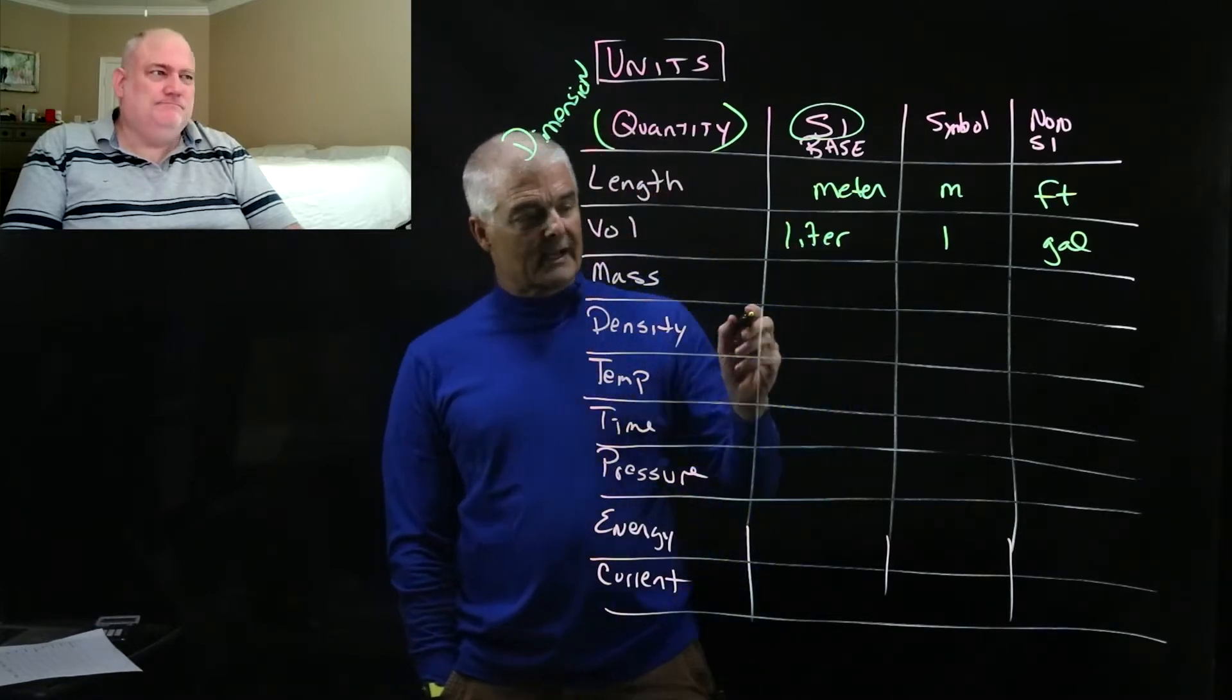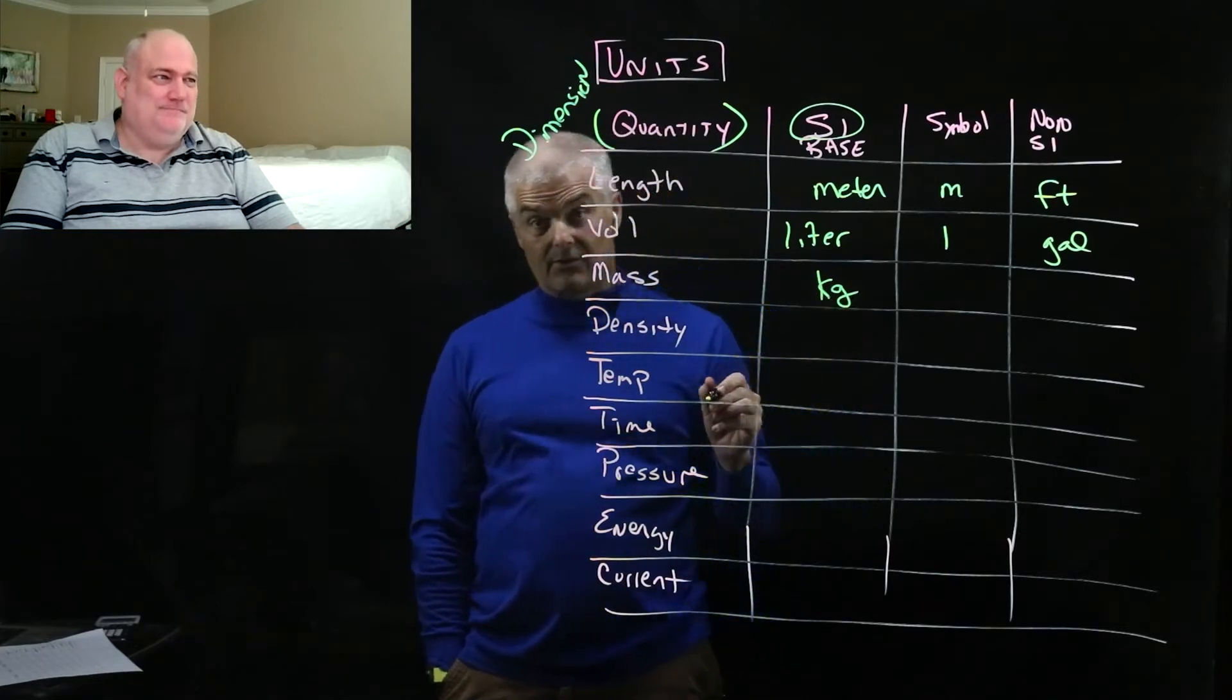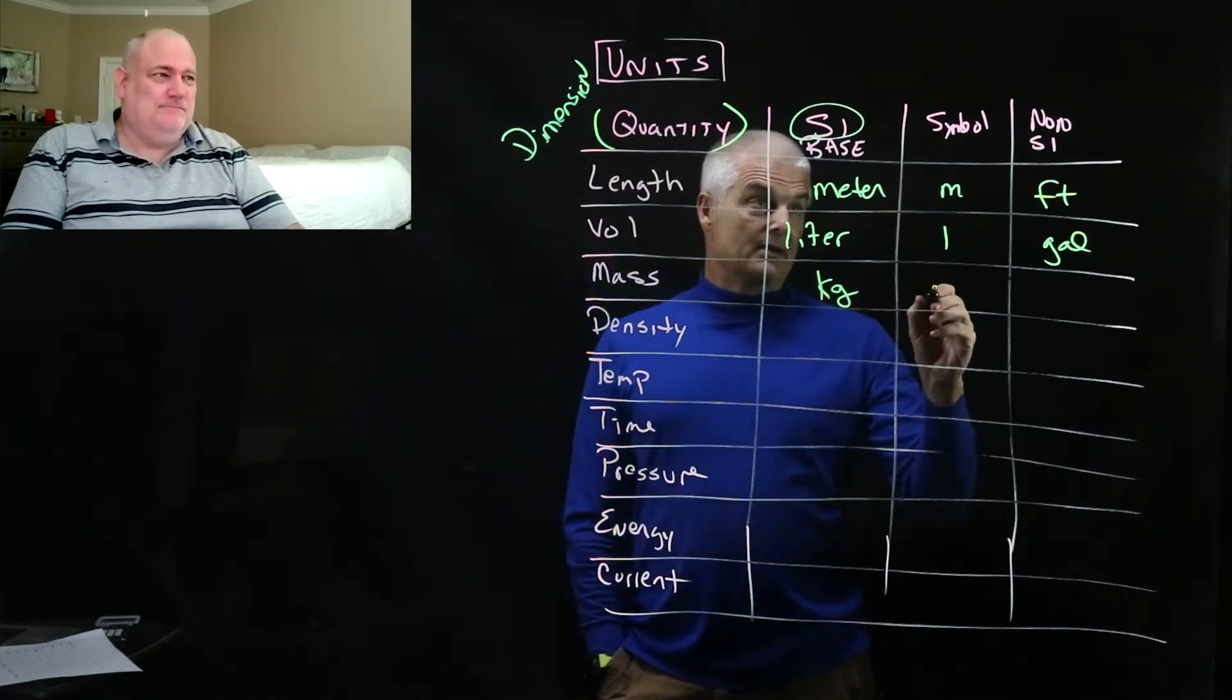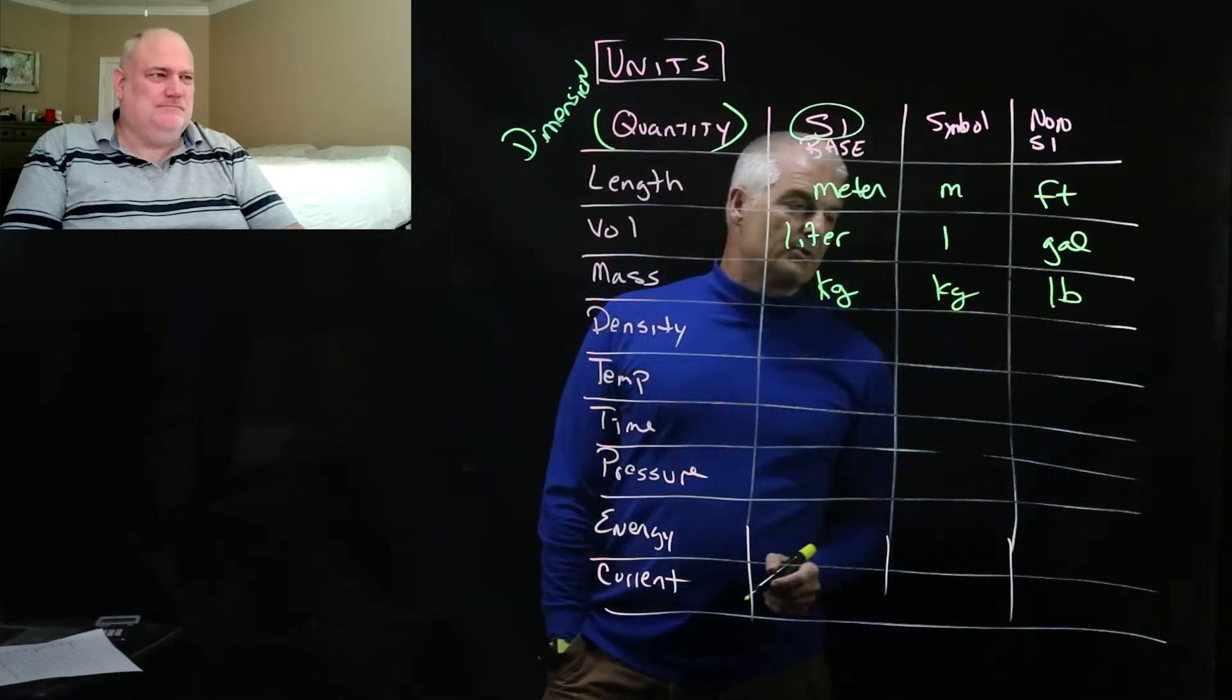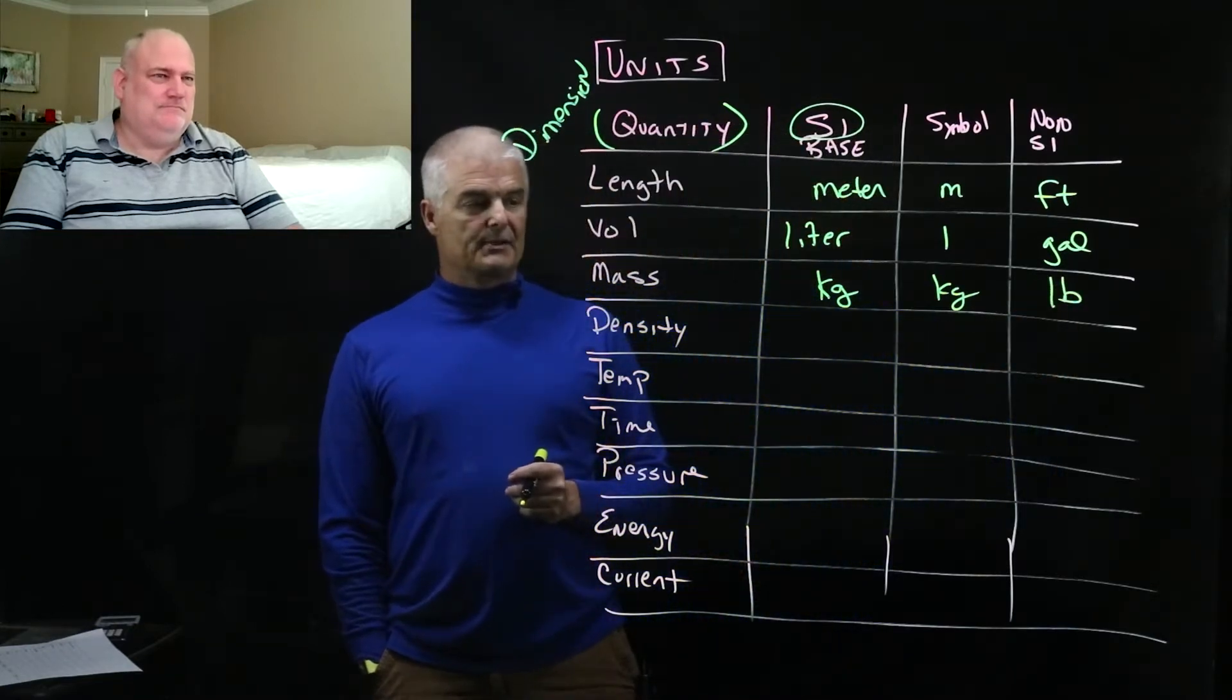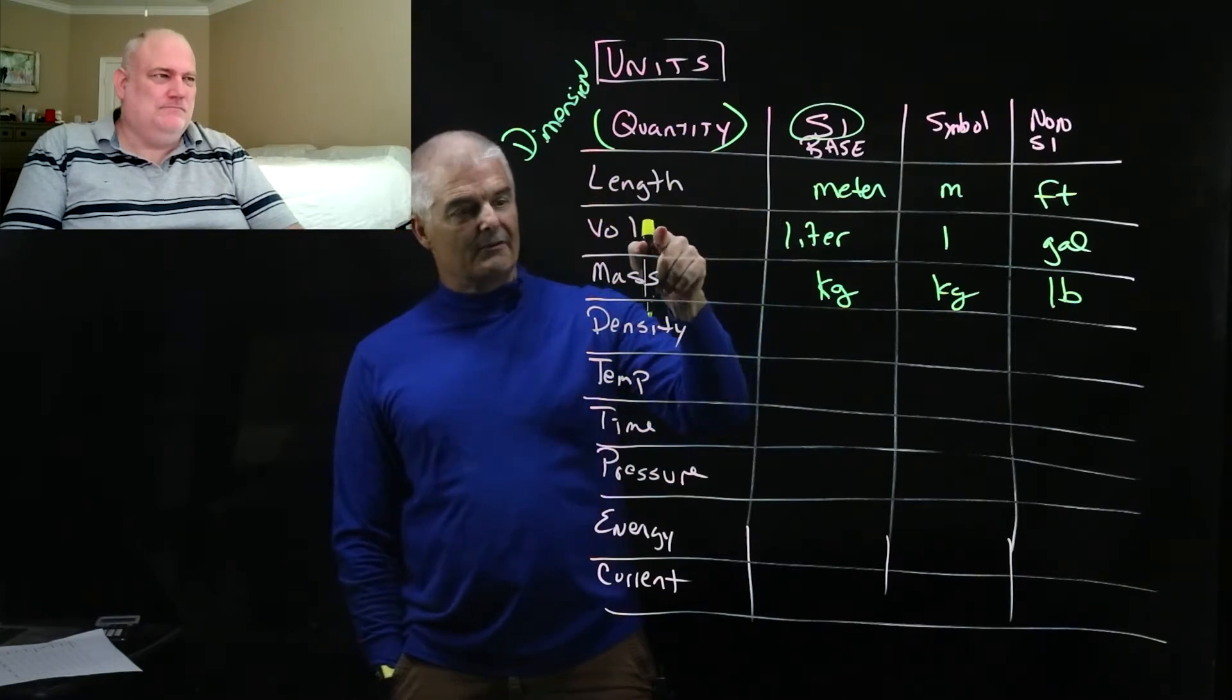Well, we use liters for liquid and we use meters cubed sometimes, but let's pass on that for right now. So liters and then the symbol is just an L. And a non one might be a gallon. There'd be quite a few other ones, right? You could have ounces and cups and things like that. Mass. Now, this is the tricky one. A lot of people don't understand, but the base SI system is actually a kilogram for mass, not a gram.